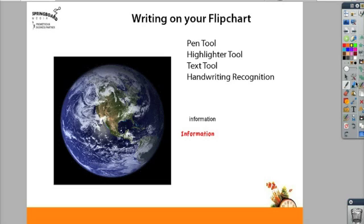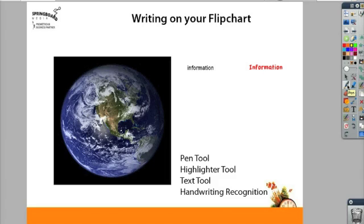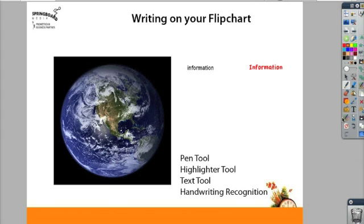If I go back to just the regular annotations tool and then hit clear annotations, that highlighter goes away. You can see that the text tool and the handwriting recognition tools did not go away. This is a nice way that you can create activities where students can add information onto the page for one class, and then you can clear the annotations and begin again with the same information for the next class.